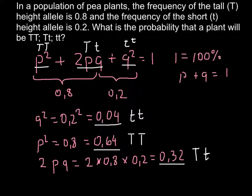We can also give our answer as a percentage. We just multiply all these numbers by 100, or transfer the comma two decimal places to the right. Here we would have 4%, 64%, and 32%. If you add all these numbers, you get 100%.